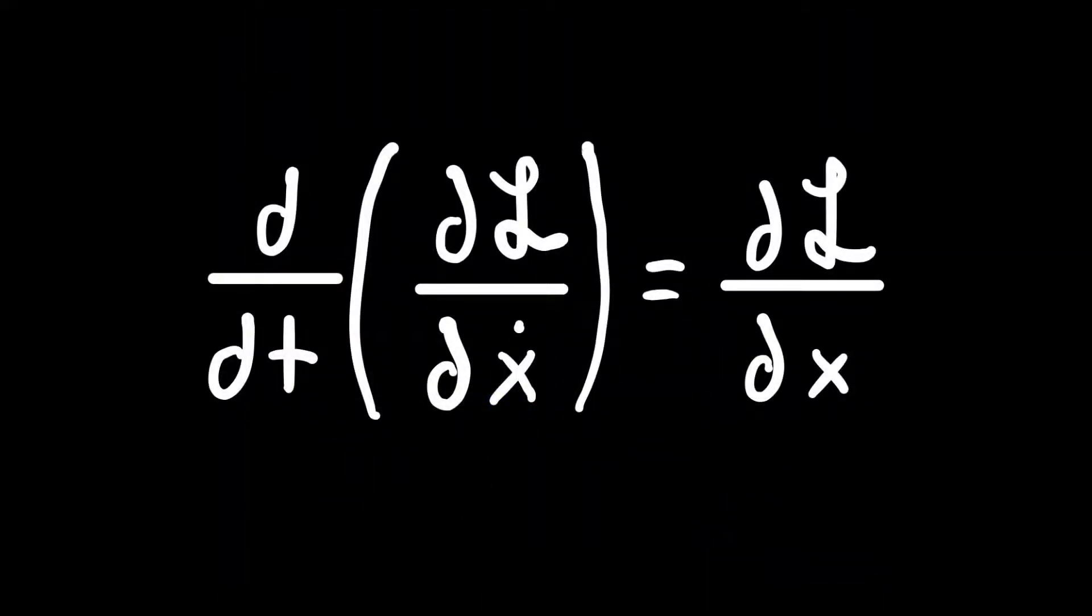This is the equation that's going to be very useful in solving these problems. Now that looks very complicated. There's an L in there and a dot on top of a letter. But what we will see is a rephrasing of Newton's second law, except in a way that can sometimes make things easier.